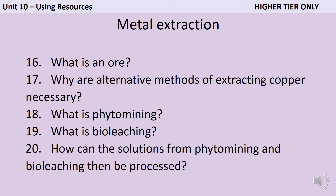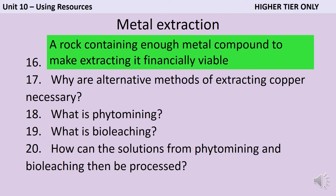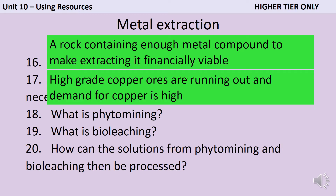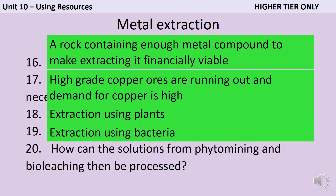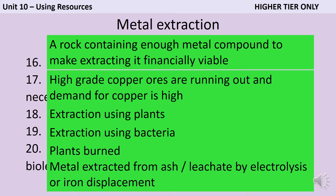This next section is for higher tier only. An ore is a rock containing enough metal compound to make extracting it financially viable. We're starting to need alternative methods to extract copper because high-grade copper ores are running out and demand is very high. Phytomining uses plants grown in fields contaminated with heavy metals like copper — as they absorb water, they also absorb copper ions. Bioleaching is similar but uses bacteria instead. The solutions from both methods can be processed by electrolysis or displacement using scrap iron. For phytomining, the plants are burned and the ash is dissolved using acid to obtain the solution.